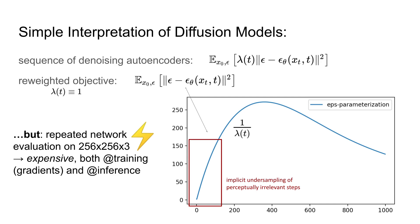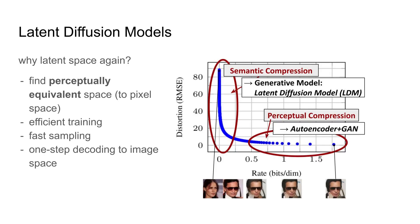And thus, we ask ourselves: is it possible to find a representation which is still perceptually equivalent but of better computational complexity? And this is where our two-stage approach comes in. We propose to first train an autoencoder, which we enrich with an adversarial objective, to learn a latent space over which we then learn a diffusion prior in the second stage.